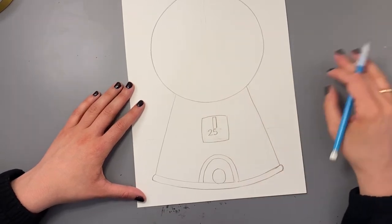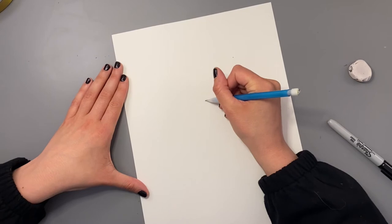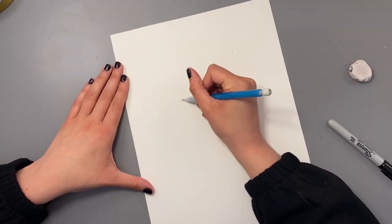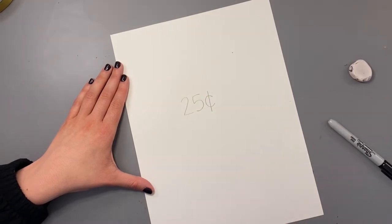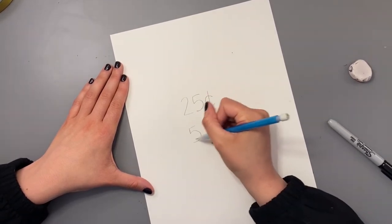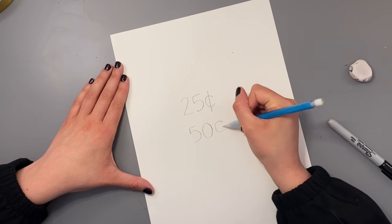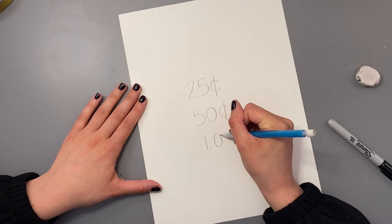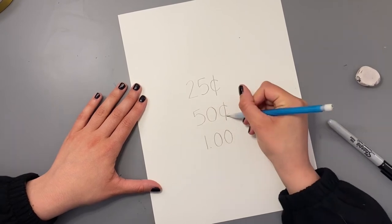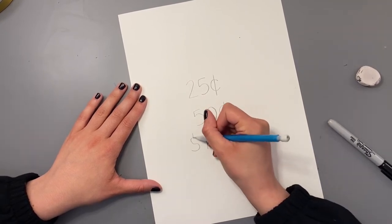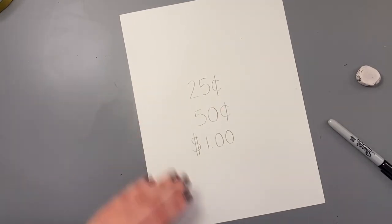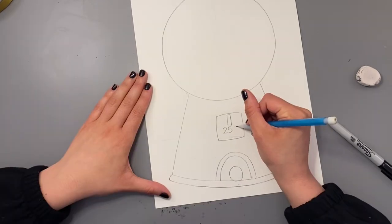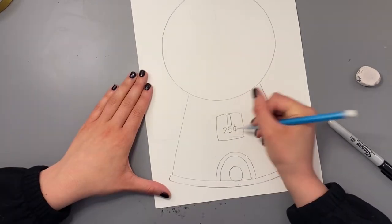How do you write a cents sign? You're going to write a letter C and then a line through it. And then the cents would be on the left side. So 25 cents, maybe 50 cents might be another price. Maybe your gumballs are expensive. So that could be a dollar, but then you wouldn't put the cent sign. You would put a dollar sign on the left side. A dollar sign is a letter S with a line through it. So I'm doing 25 cents. So there's my cent sign.